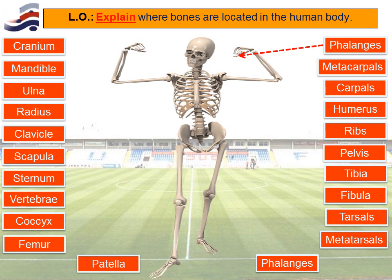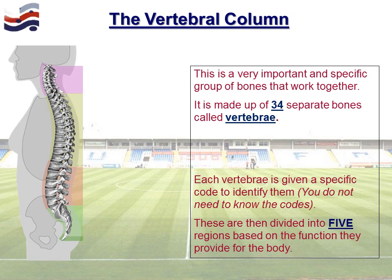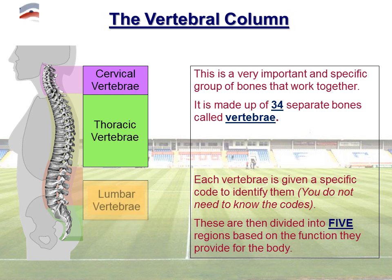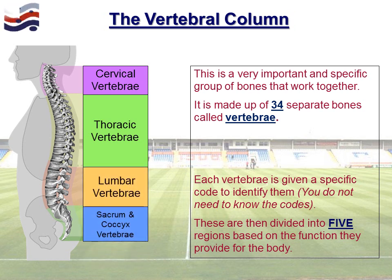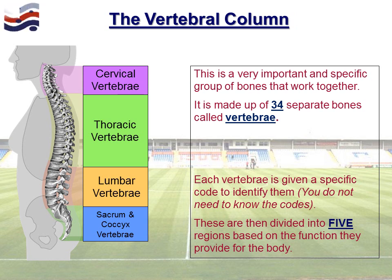So hopefully you managed to correctly identify where these bones are located in the human body. Moving on to some specialist information now: we'd like to look at the vertebral column, because there's some information you need to be very aware of. This is a very important specific group of bones that work together, and it is made up of 34 separate bones called vertebrae. Each vertebra is given a specific code to identify it — you don't need to know that — however, they are essentially divided into five regions based on their function.